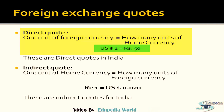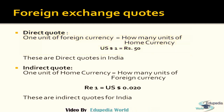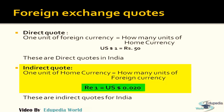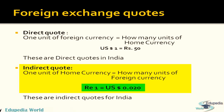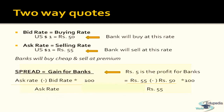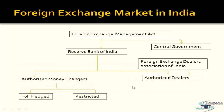How much one unit of home currency equals in units of foreign currency is called an indirect quote. So when I say rupee one equals US dollar 0.020, this is an indirect quote for India. Now, the question is: from where can you get this foreign exchange?